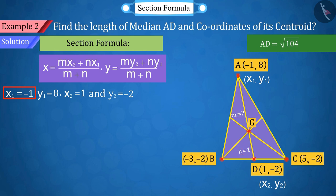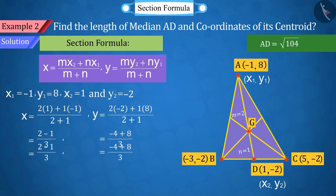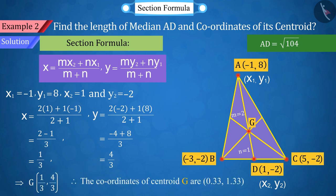From m, n, x₁, y₁, x₂, and y₂, put the values in the section formula. On solving, the coordinates of point G we get are (0.33, 1.33).